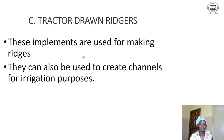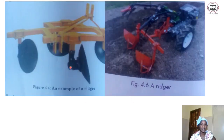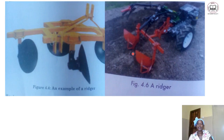Then we also have the tractor-drawn ridger. Tractor-drawn ridgers are implements used for making ridges. Most times they can also be used to create channels for irrigation purposes, but the main purpose of the tractor-drawn ridger is to make ridges. This is an example of a ridger — this picture shows a ridger.